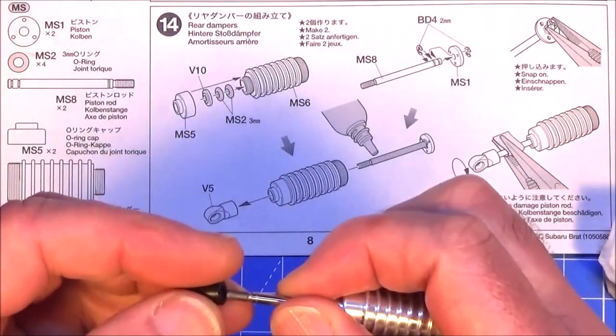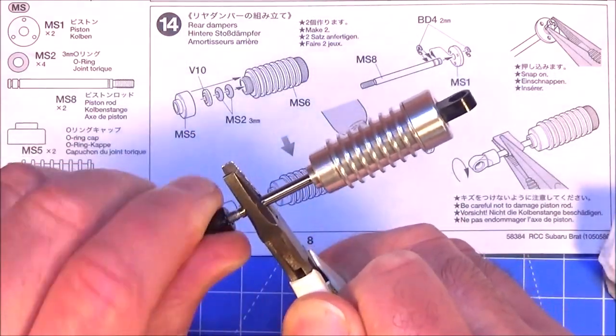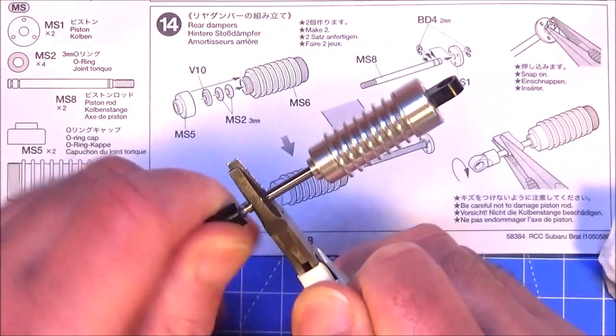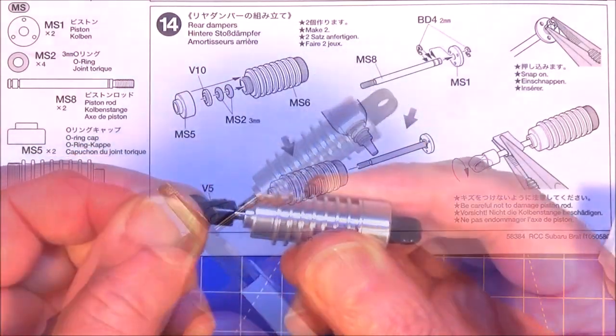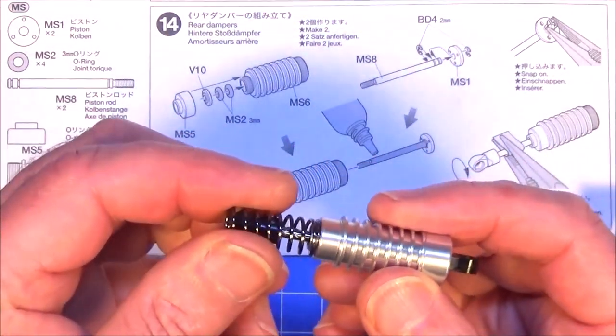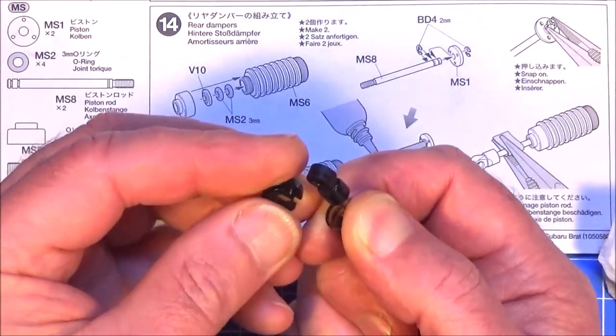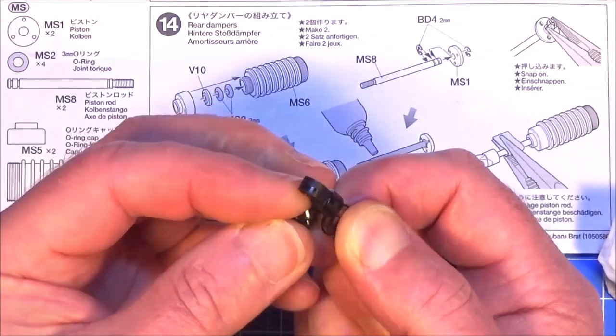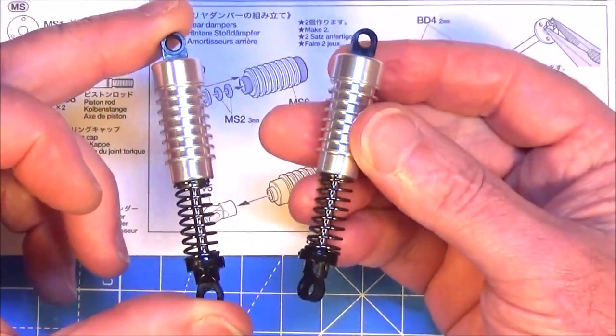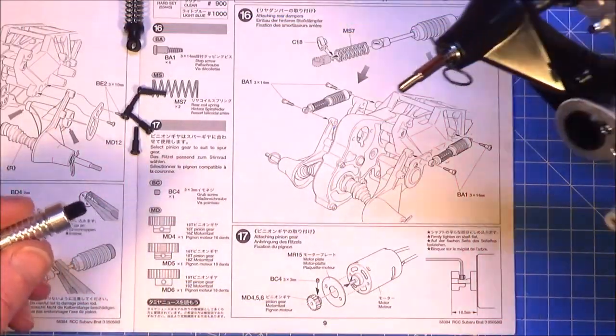Then you want V5 which is your bottom mount, and just screw that on. And I've got these small pliers that have no serrations so I'm not going to damage the shaft. Let's check that's nice and smooth. E spring, pop that over. And then it's plastic part C18 which holds the bottom of the spring. So that's the shock done, and obviously make two. In step 16 we're going to fit those shocks now. It's very simple.